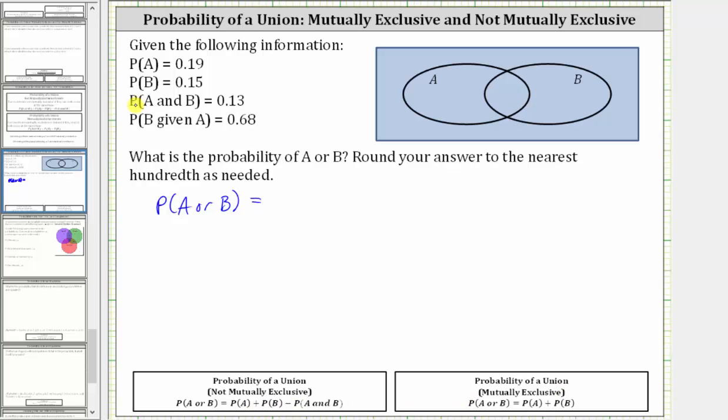From the given information, we're told the probability of A and B is equal to 0.13, which means the probability of being in the intersection of set A and set B, which is this set here, is 0.13. Let's go ahead and label this.